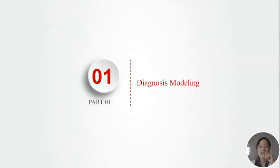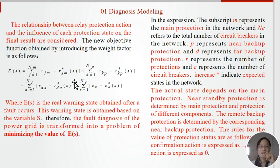Part 1: Diagnosis Modeling. The relationship between relay protection action and the influence of its protection state on the final results are considered. The new objective function obtained by introducing the weight factor is as follows. Where E(S) is the real warning state obtained after a fault occurs, the warning state is obtained based on the variable S. Therefore, the fault diagnosis of the power grid is transformed into a problem of maximizing the value of E(S).